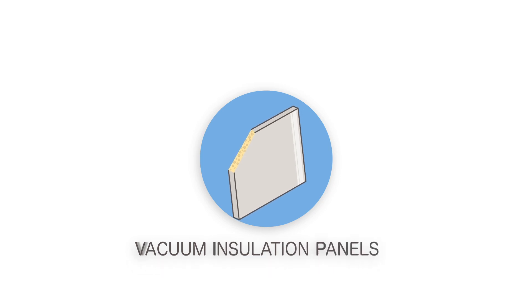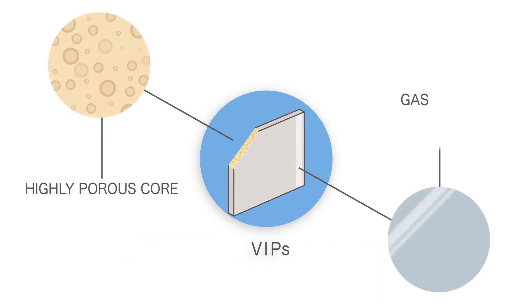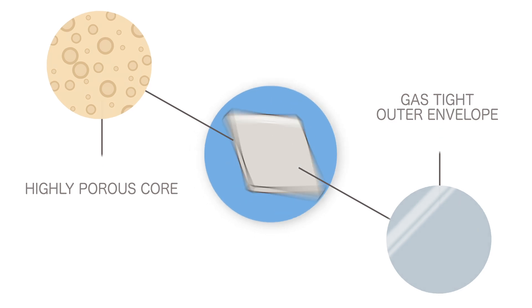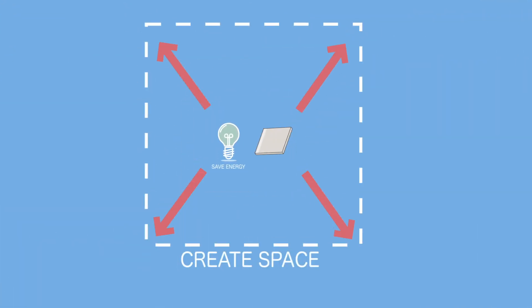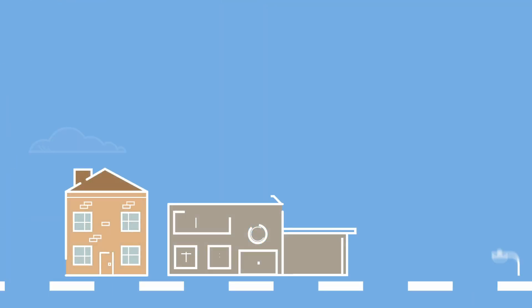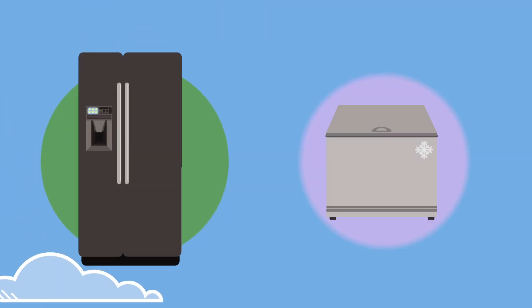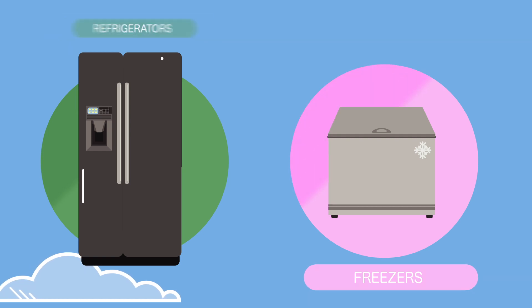Vacuum insulation panels, or VIPs for short, are an innovative insulation technology that save energy and create space in a number of sectors. VIPs have been used in home appliances for decades, mainly in refrigerators and freezers.